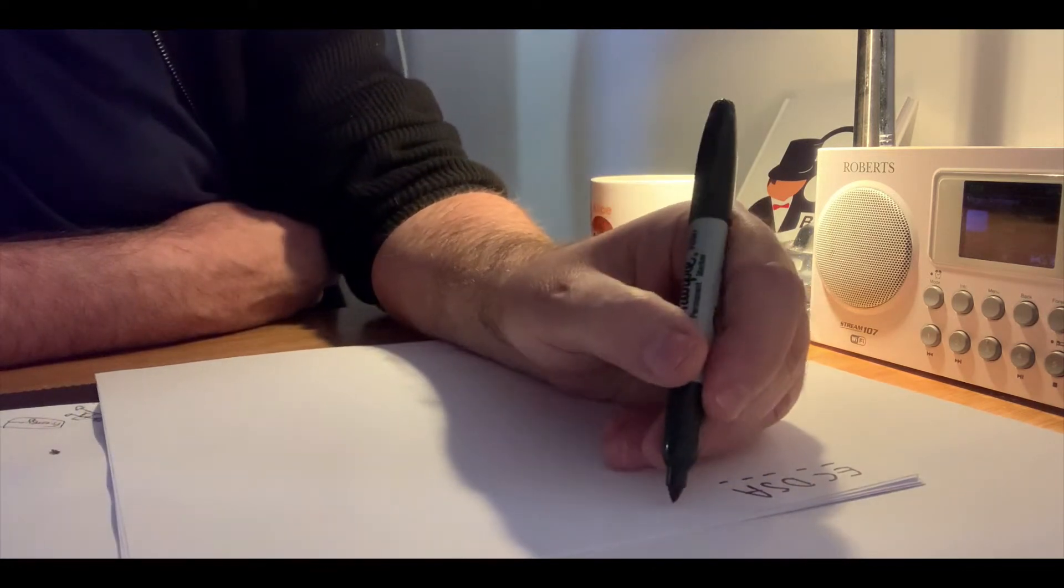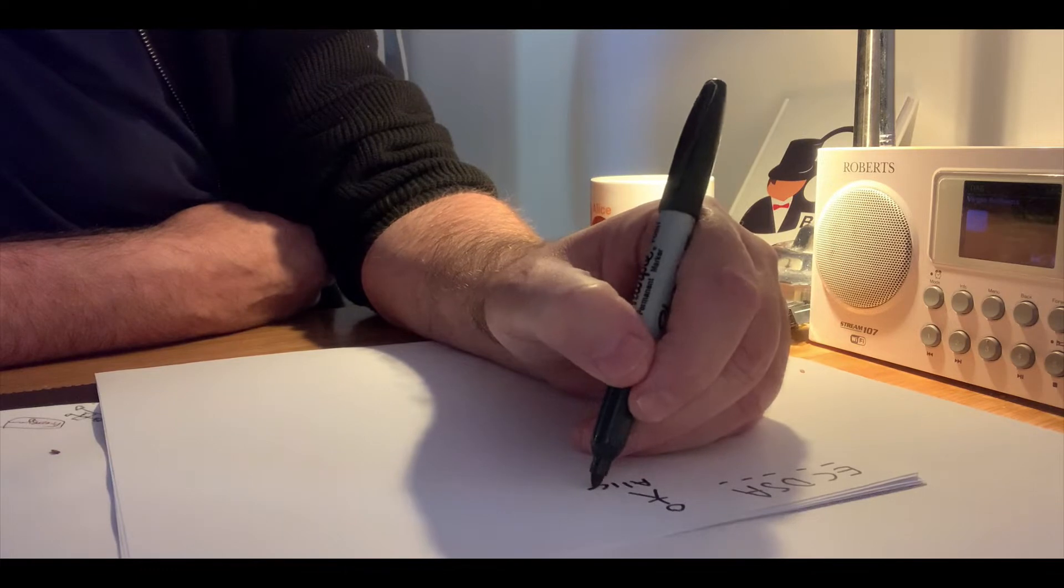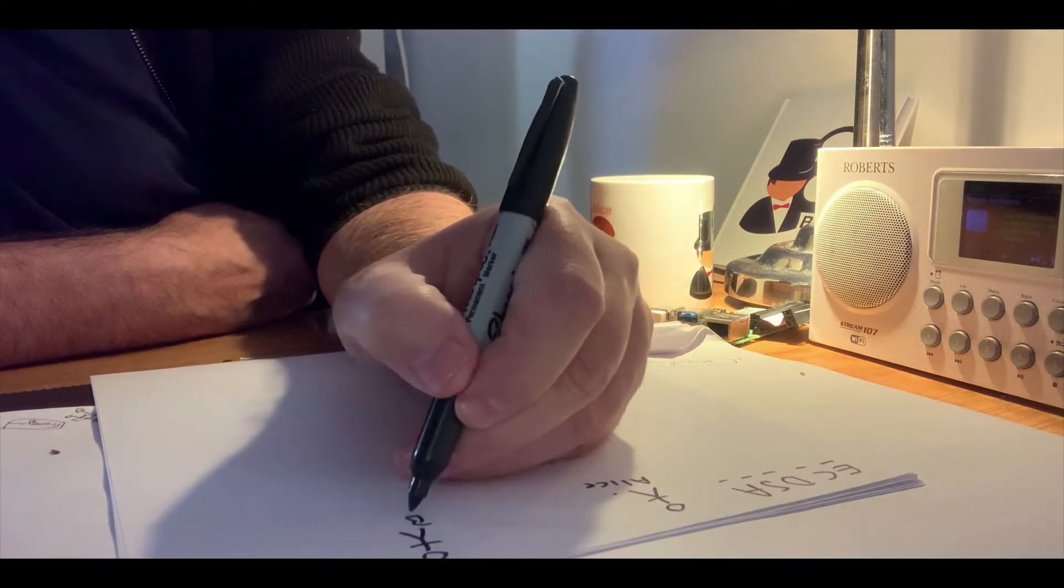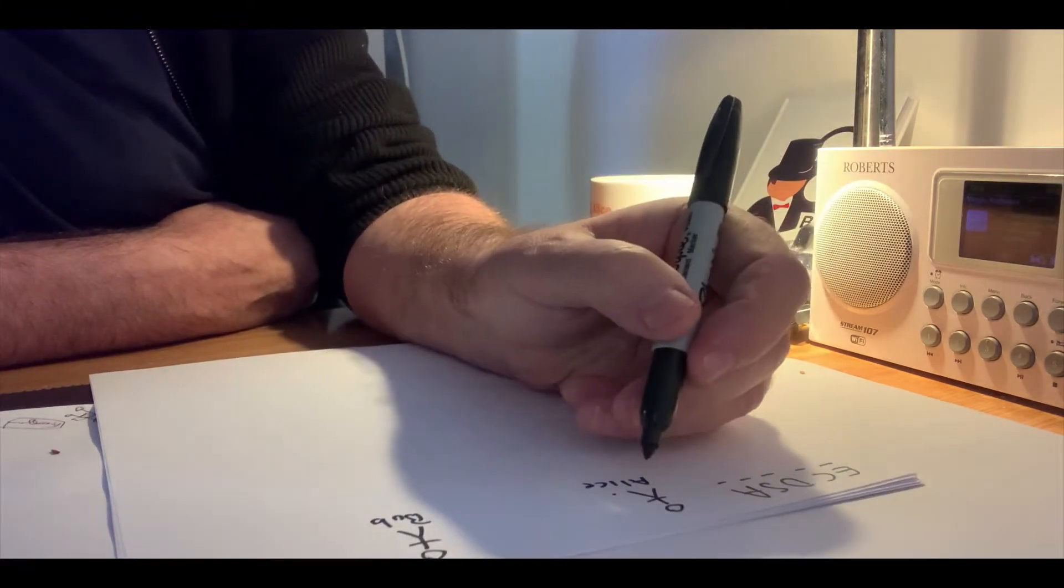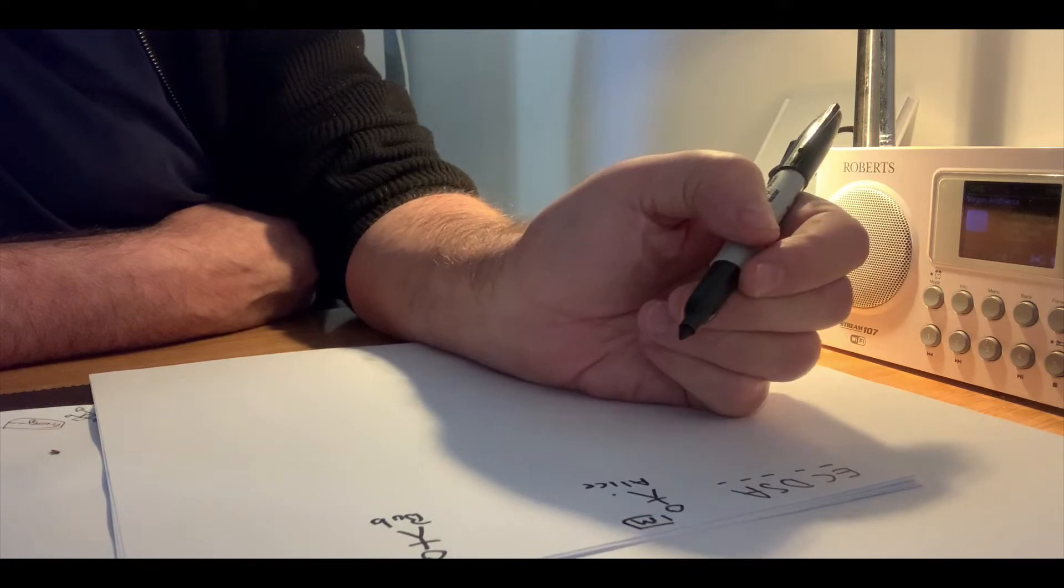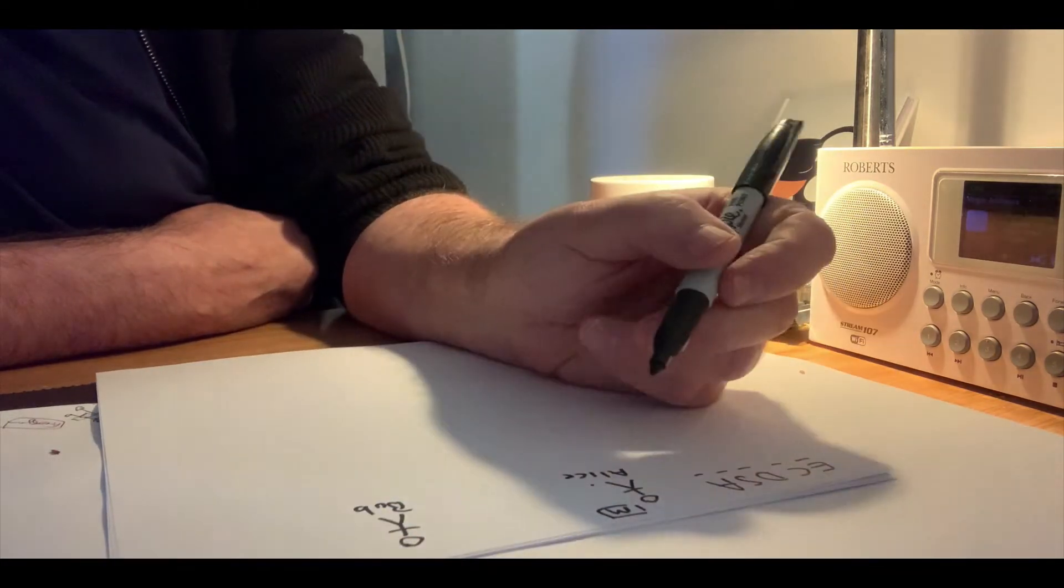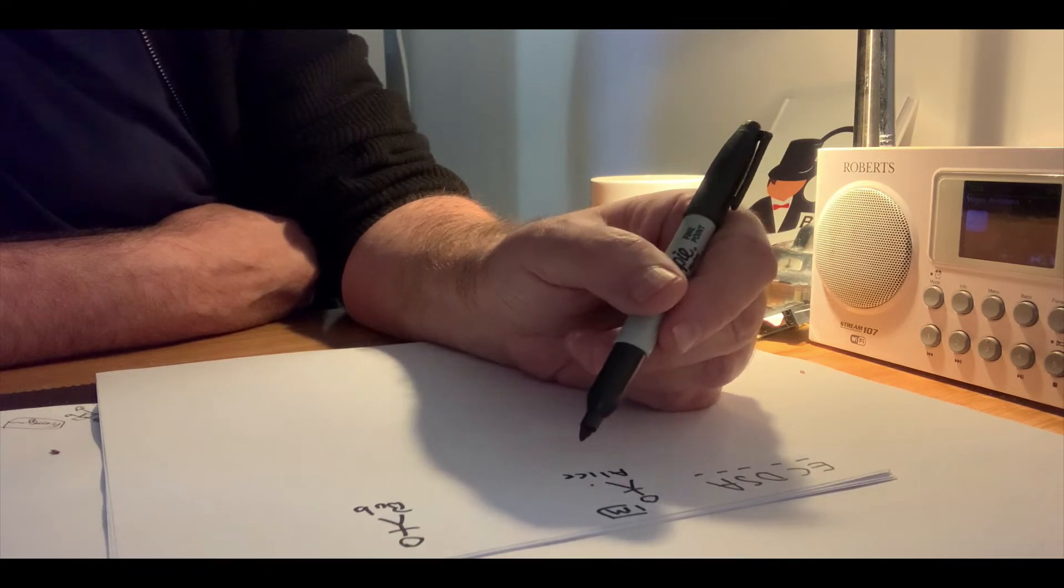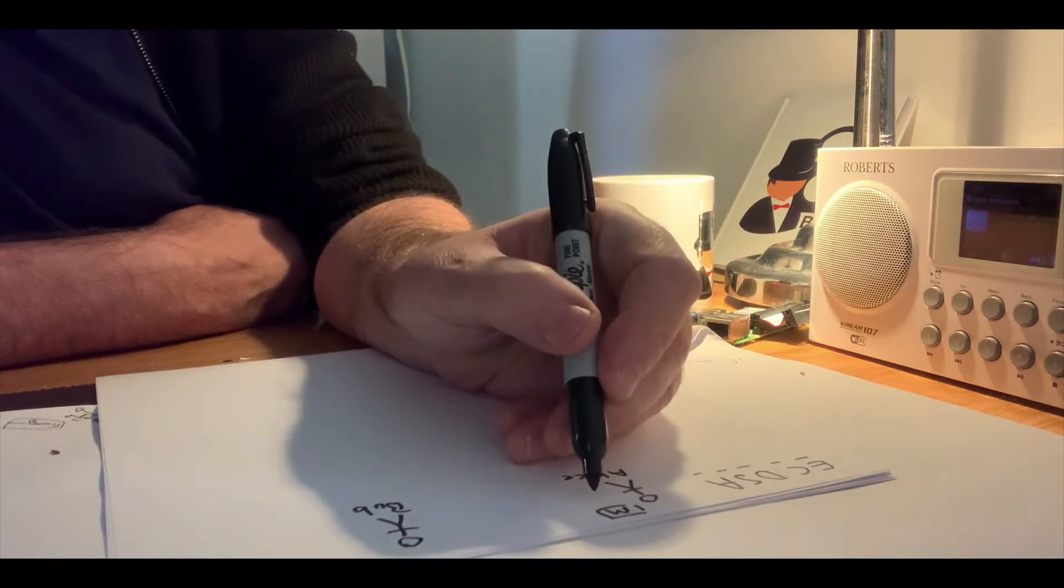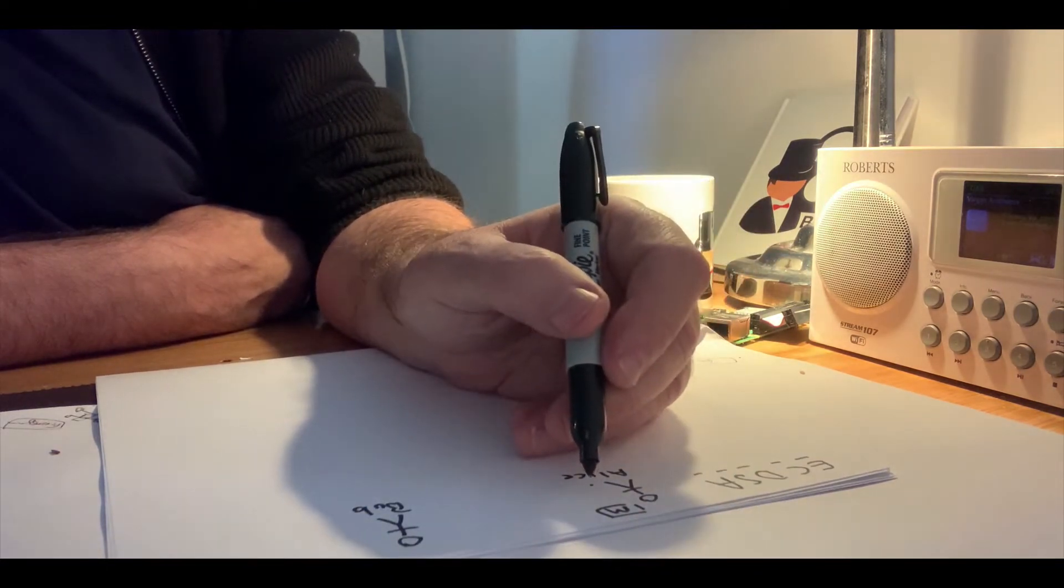So if we think about it, we have Alice, and here's Alice, and we have Bob, here's Bob. So Alice wants to send a message to Bob and to prove that she is the one that is signing the message with a digital signature.